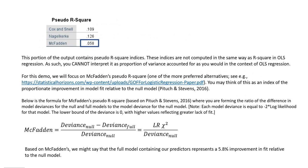This portion of the output contains pseudo R-squares. These indices are not computed the same way as R-square in ordinary least squares regression, so you can't interpret them as the proportion of variance accounted for. Nevertheless, you might think of these as representing something akin to the proportionate improvement in model fit relative to the null model. I've identified the McFadden pseudo R-square, one of the more preferred alternatives. Based on McFadden's, our full model represents a 5.8% improvement in fit relative to the null model.